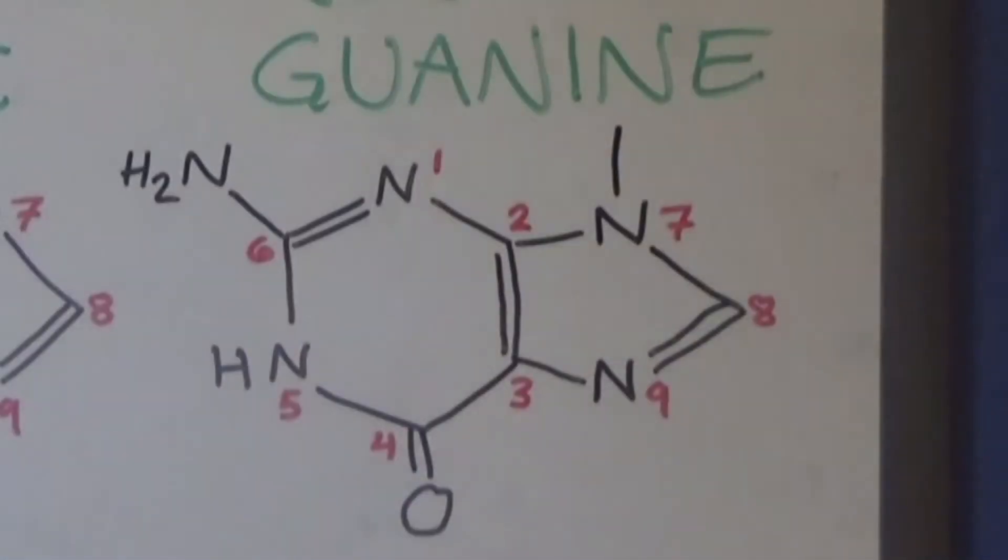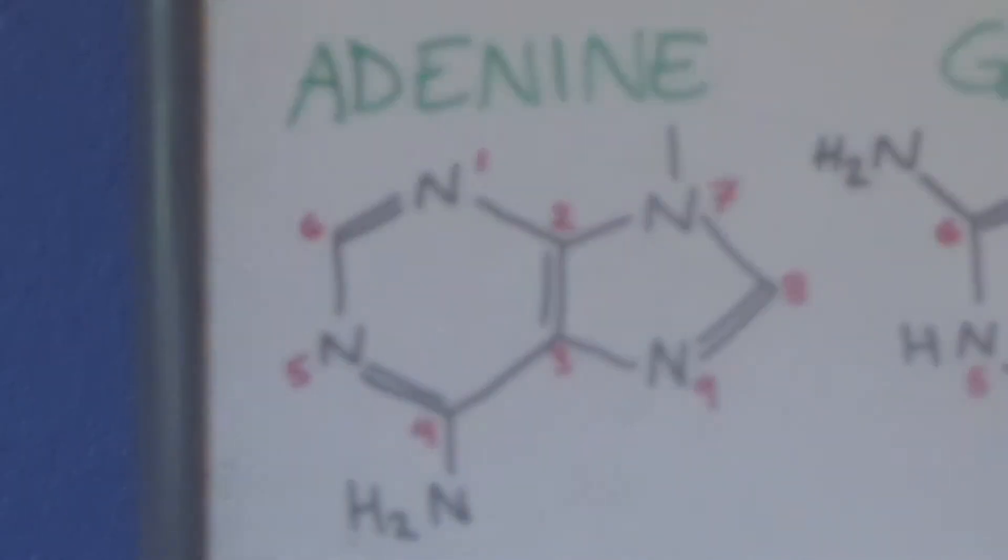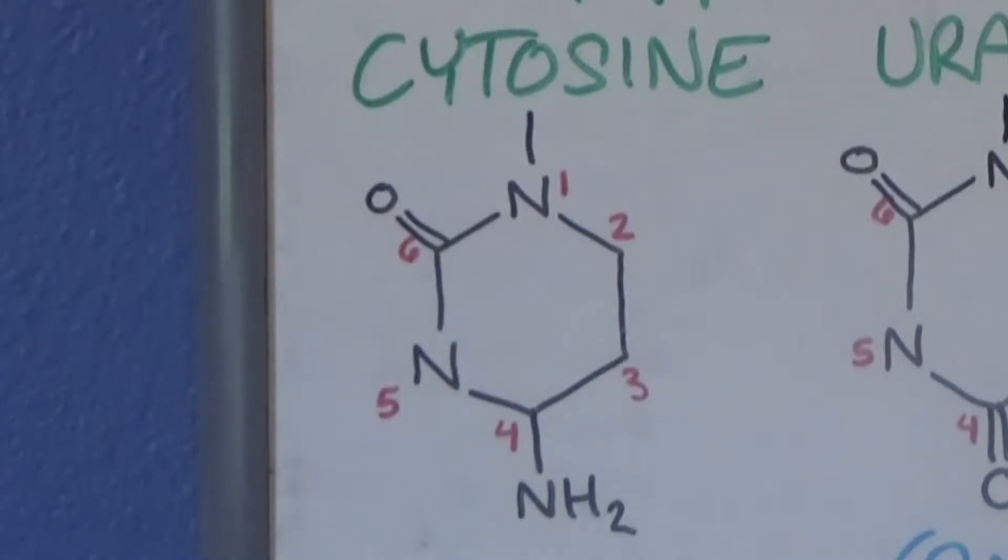Guanine has an oxygen double bound to its four-prime carbon and an amino group bound to its six-prime carbon. Adenine, the other purine base, only has an amino group bound to the four-prime carbon. Now the three pyrimidines. You have cytosine, which has an amino group on its four-prime carbon and an oxygen double bound to its six-prime carbon. The five-prime nitrogen atom in cytosine doesn't have a hydrogen atom bound to it. Instead, it shares a double bond with the four-prime carbon.